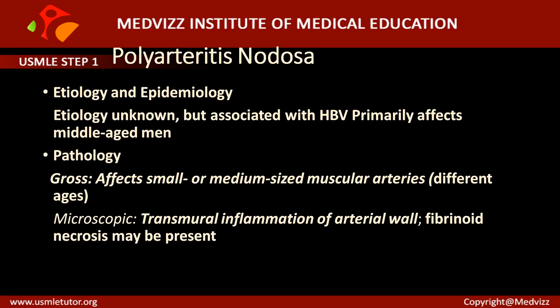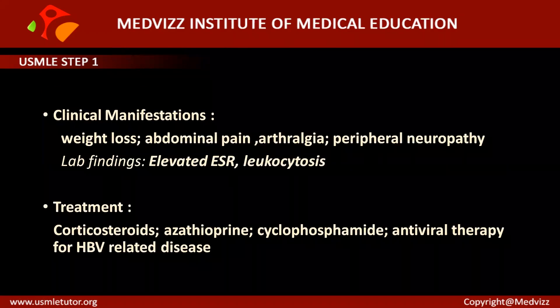Microscopically, PAN shows transmural inflammation — meaning all three layers of the vessel wall are involved. This inflammation is associated with recruitment of neutrophils, eosinophils, and mononuclear infiltrate. Fibrinoid necrosis of the vessel wall may be present in the majority of PAN cases. This covers the etiology, epidemiology, and pathology of polyarteritis nodosa.